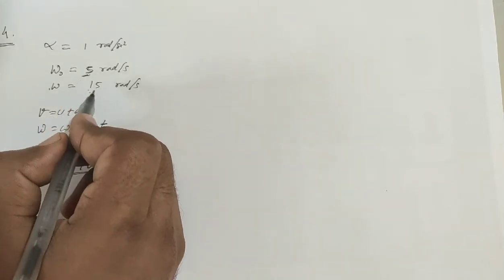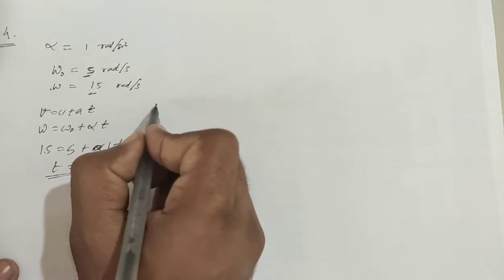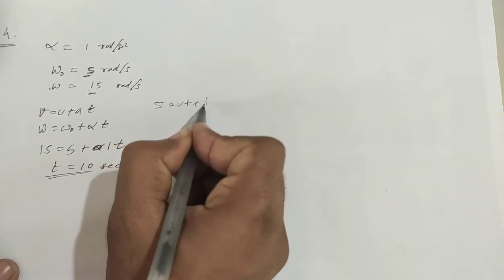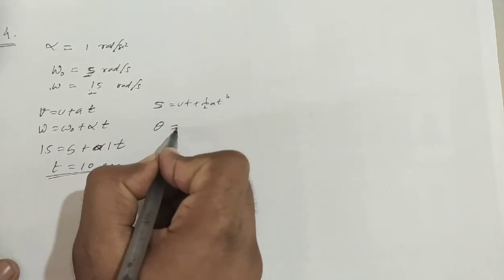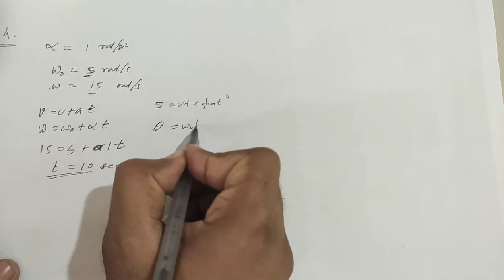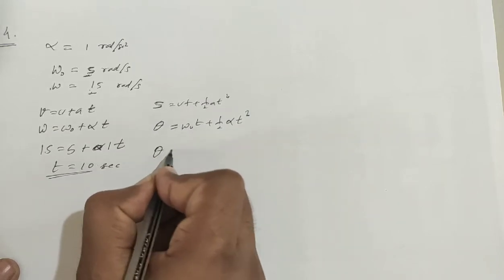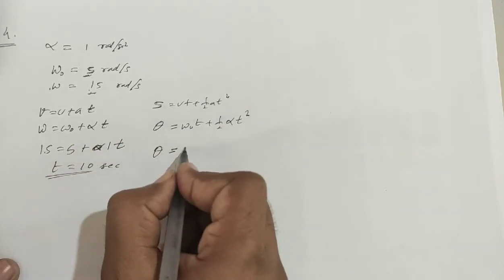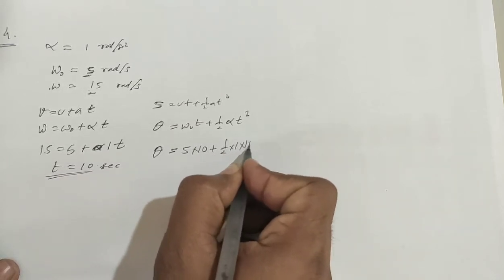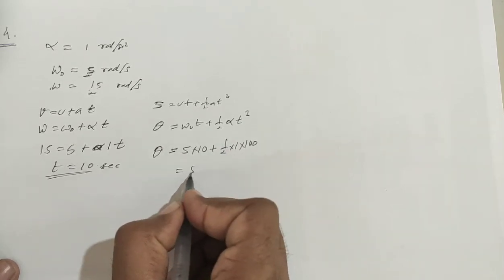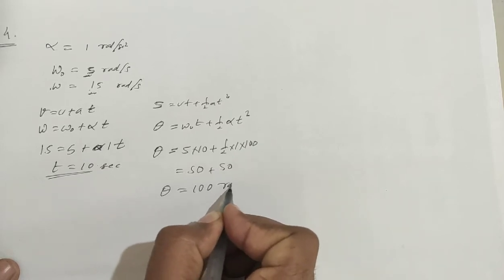Now the angle formula is the angular equivalent of x = ut + half a t squared, which becomes theta = omega naught times t plus half alpha times t squared. Substituting the values: theta = 5 times 10 plus half times 1 times 10 squared, which gives theta equal to 100 radians.